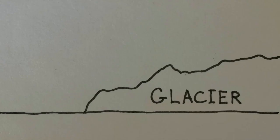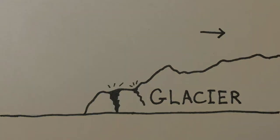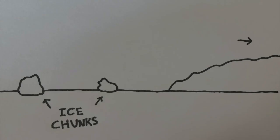First we have our glacier — the Laurentide Ice Sheet — and it has advanced all the way into southern Wisconsin, just north of Janesville, actually pretty close to where we are in Beloit. Then at a certain point the glacier starts to retreat back to the North Pole, and as it melts, big chunks of ice start to break off of the end of the glacier as it retreats, leaving all of these big chunks scattered all over the place as it creeps further and further north.